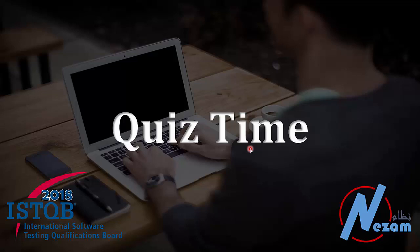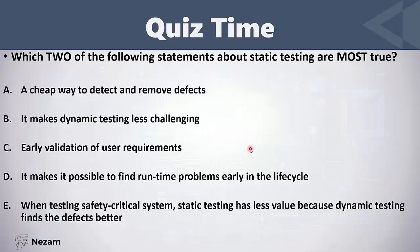Let's now solve some questions on this part. Which two of the following statements about static testing are most true? Answer A: a cheap way to detect and remove defects. This is correct — static testing is a way to find and remove defects early, which is cheaper than finding them late in the life cycle.